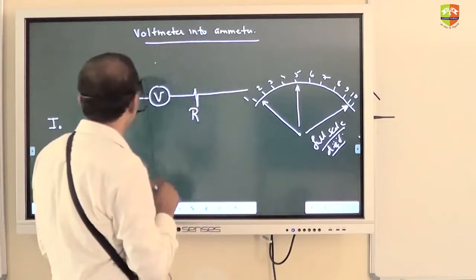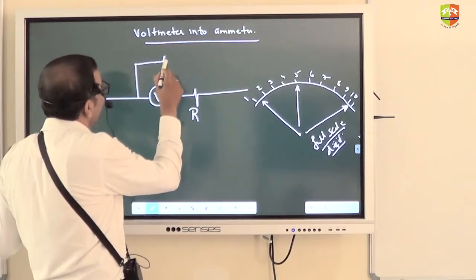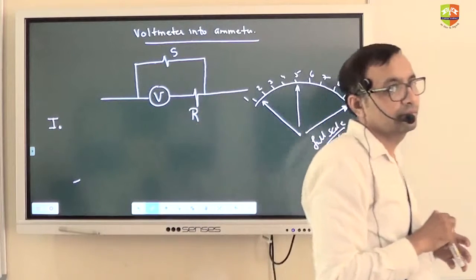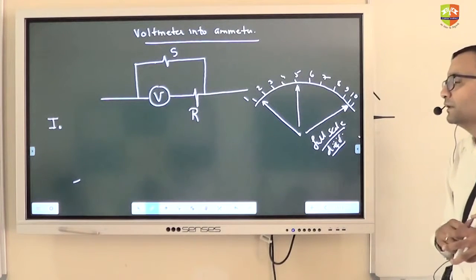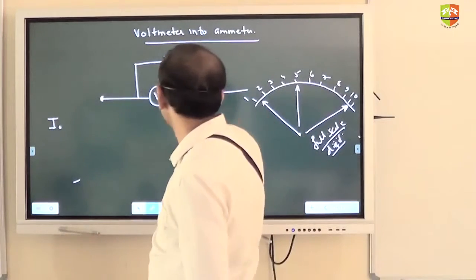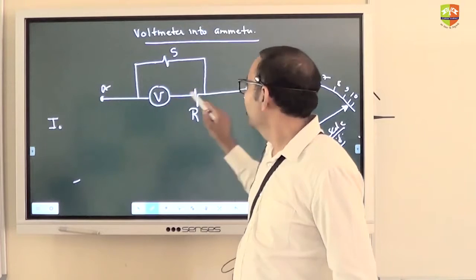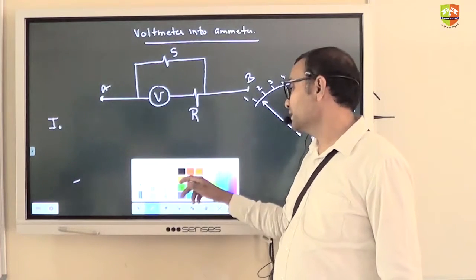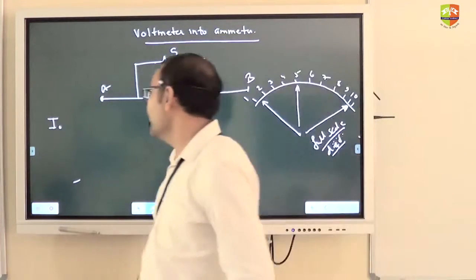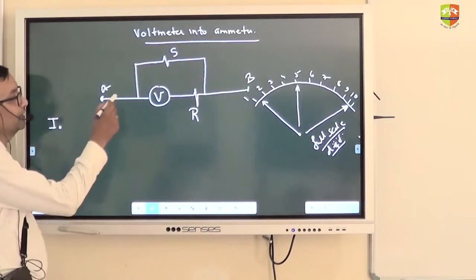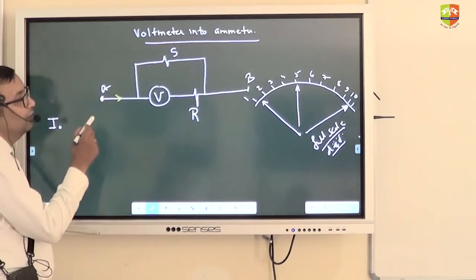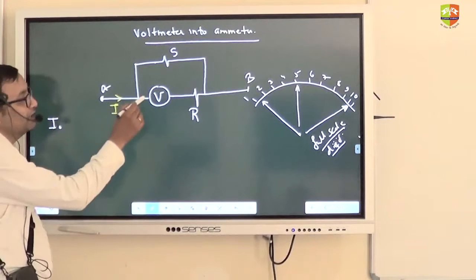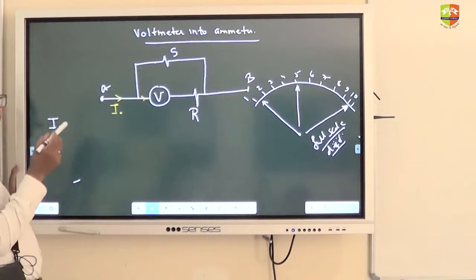Now suppose I want to build an ammeter of full scale deflection for I0. Then this is how I will do: I will connect a shunt resistance of S like this, parallel. And then I will connect this in series in the circuit. This point A and B will be connected in series, understood? Now I am measuring maximum current I0. So I0 will be where? Through AB. This is I0.